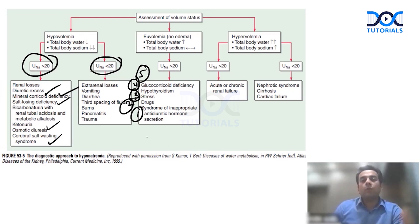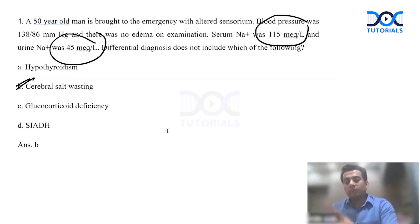If it is a hypervolemic hyponatremia, then if the urinary sodium is more than 20, then it is a renal cause which is renal failure, maybe acute, maybe chronic. But if the urinary sodium is less than 20, it's an extrarenal cause. Could be due to the heart, that is heart failure, could be due to the liver, liver cirrhosis, or nephrotic. This is how you approach.